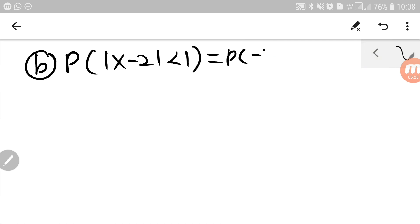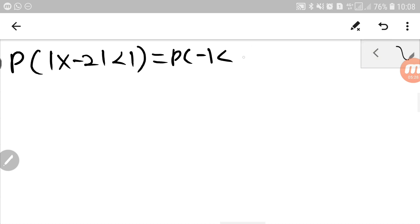So it's minus 1, greater than x minus 2, less by 1. We can simplify it further by simplifying the middle part. So 1 plus 2 is 3, minus 1 plus 2 is 1.